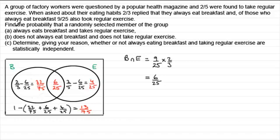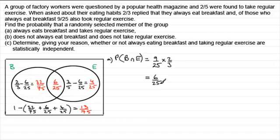For part A, find the probability that a randomly selected member of the group always eats breakfast and takes regular exercise. That's the intersection region — the proportion of people that have breakfast and take regular exercise. So the probability of B and E turns out to be six-twenty-fifths.